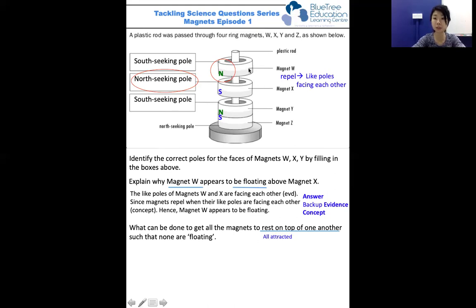So essentially, we want all the magnets to stack up on top of one another, and to do so, we need to make sure that all the magnets are attracted to each other. And the concept behind allowing this to happen is to make sure that the unlike poles are facing each other.